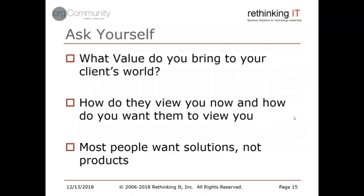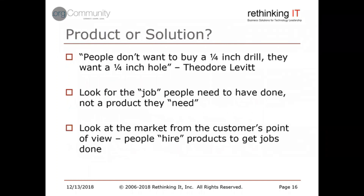The classic example is from Theodore Levitt, an expert on marketing, who always said: people don't want to buy a quarter-inch drill, they want a quarter-inch hole. They have to buy the drill to get the hole, but they don't really want the drill. The idea is to look for what job people need done — not particularly a product. A lot of times we sell ourselves as a product, when we should be looking at what solution people want to hire.